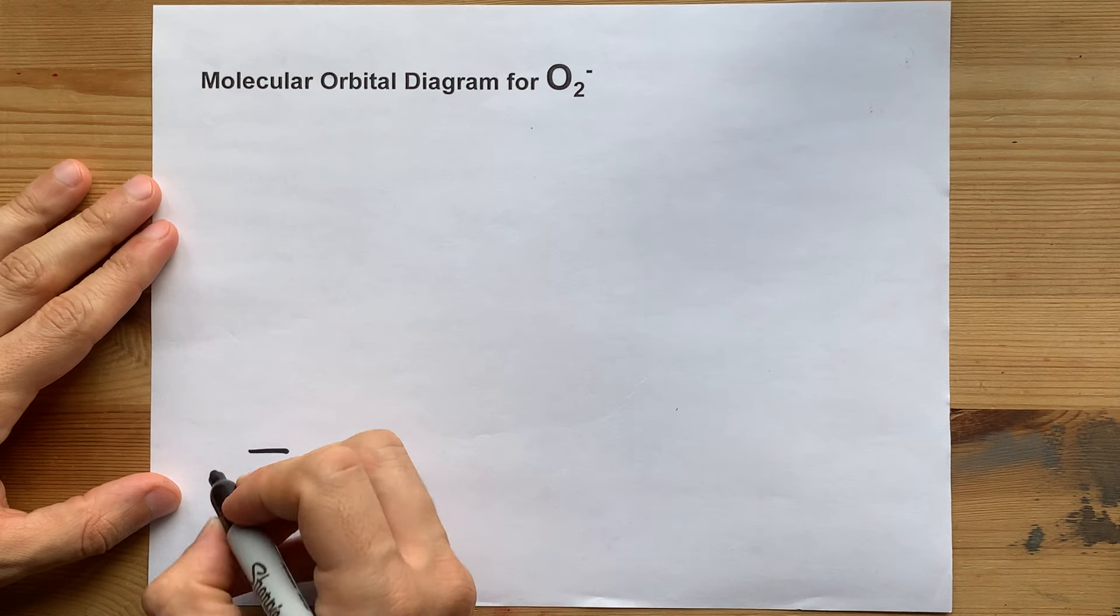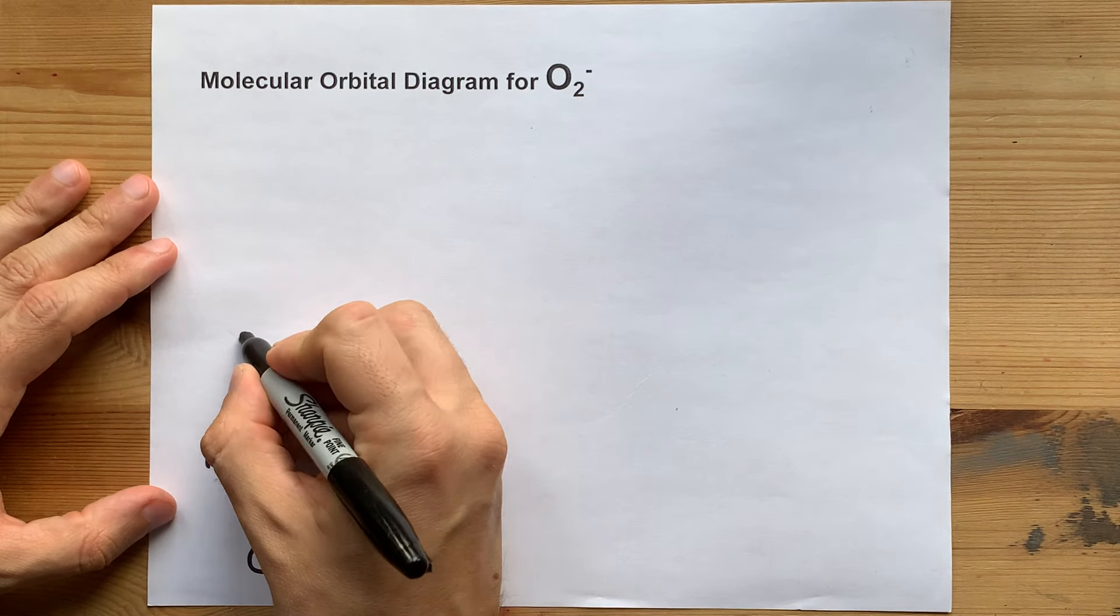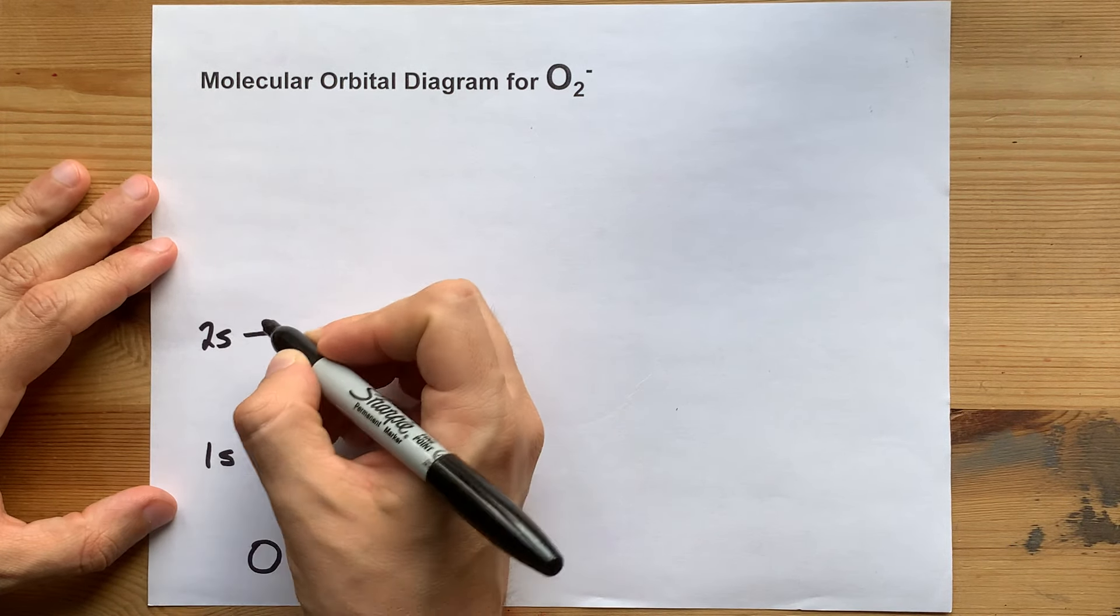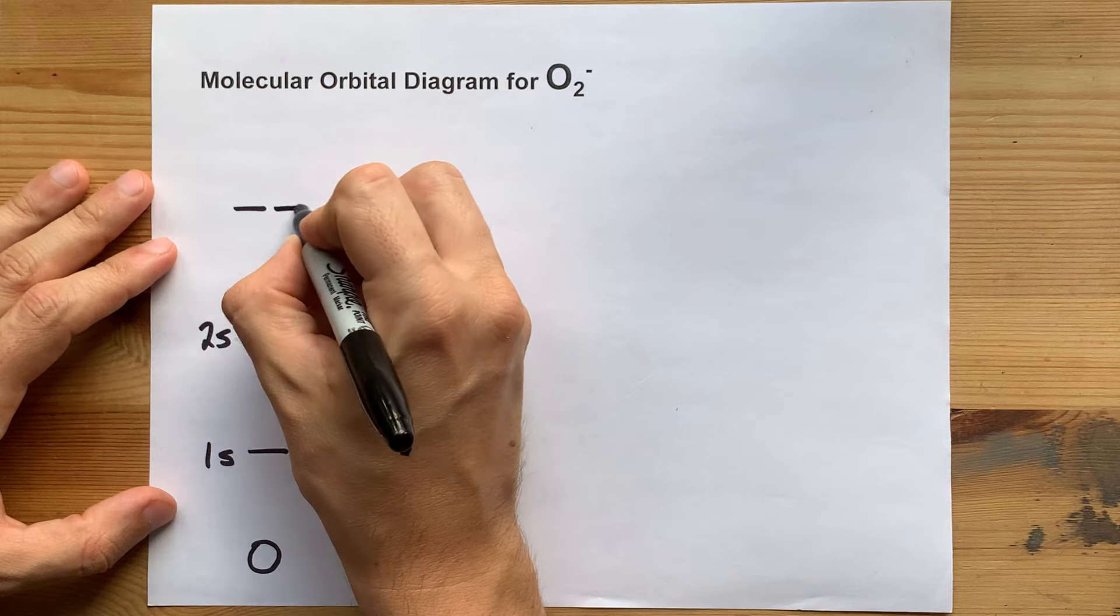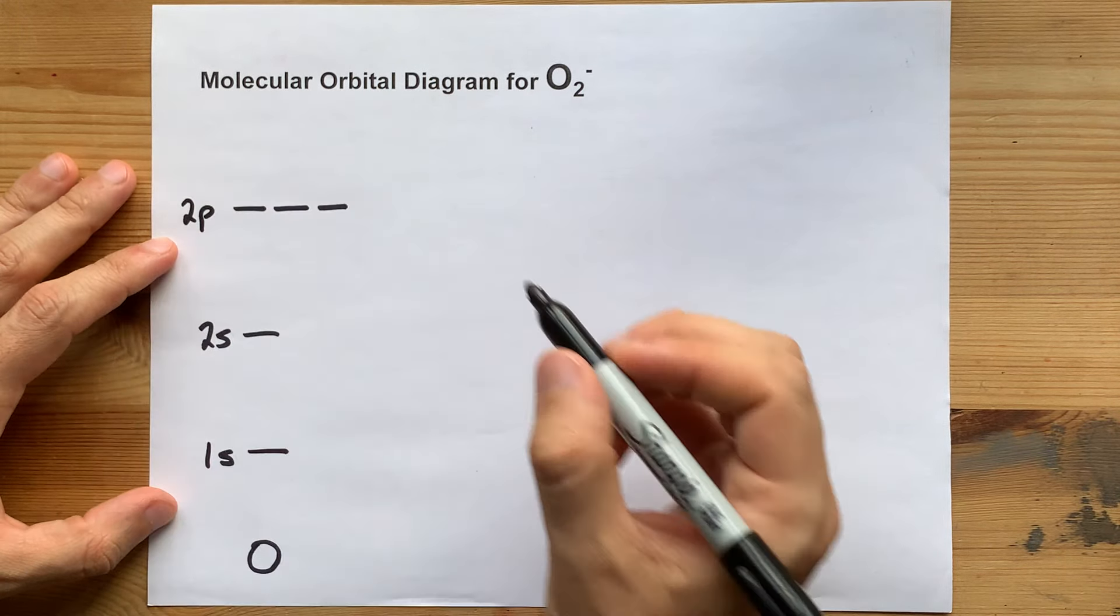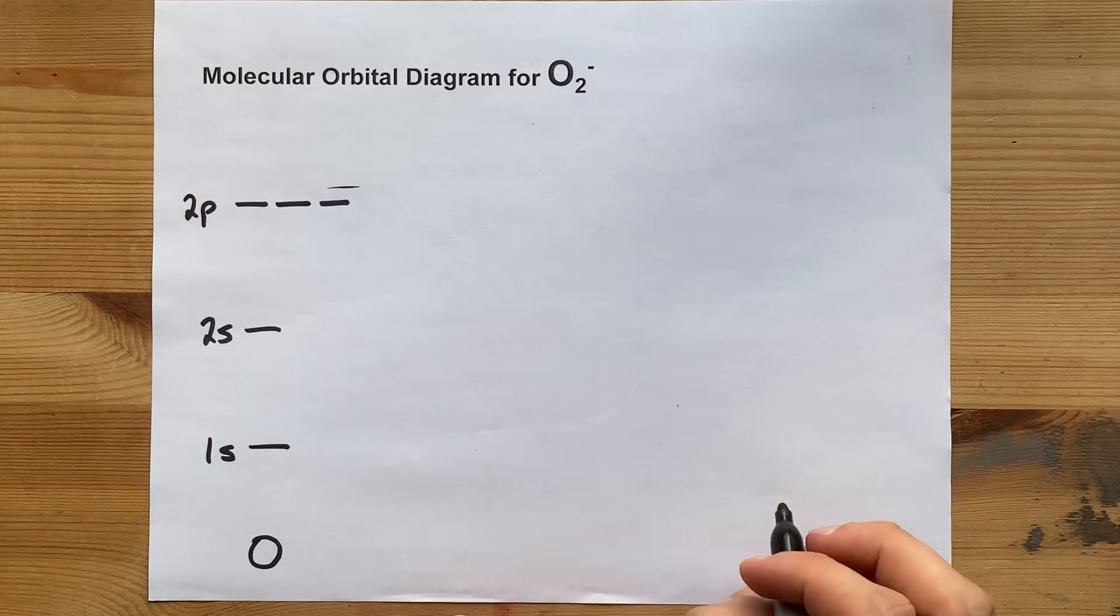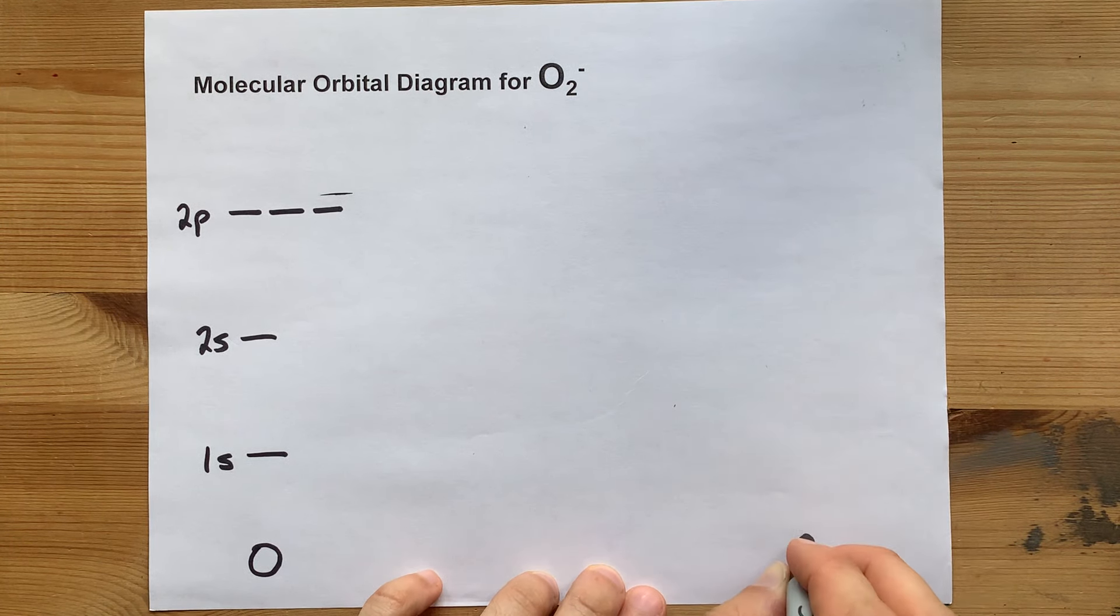If we include the inner shells, then we have a 1s orbital, then we have a 2s orbital, then we have three degenerate, meaning equal energy, 2p orbitals. Now, these are normally filled with electrons, but let's get to the diagram itself first.